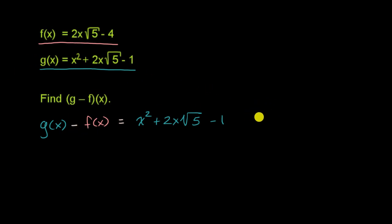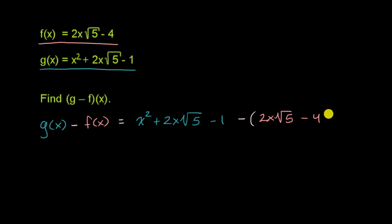And what is f of x? It's going to be two x times the square root of five minus four. And we are subtracting f of x from g of x.